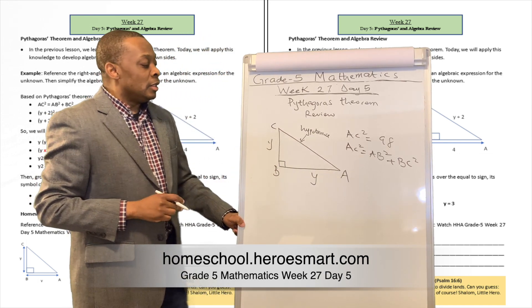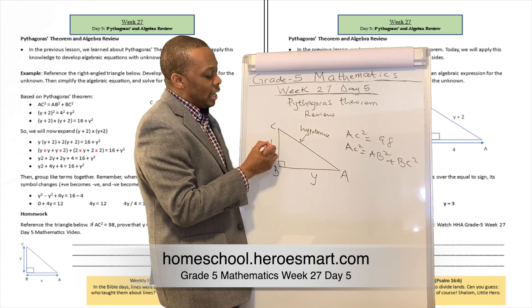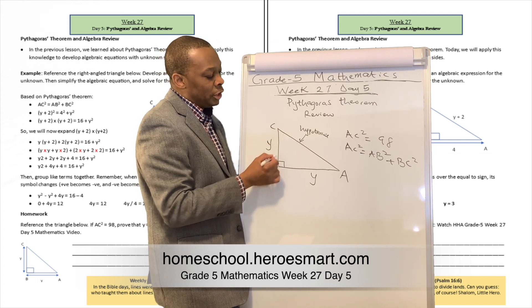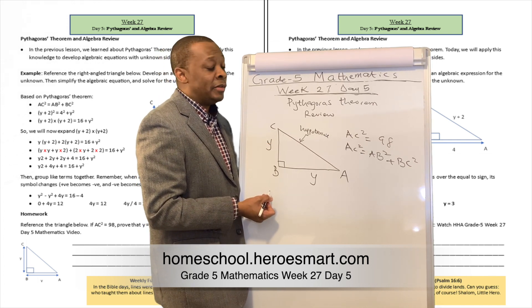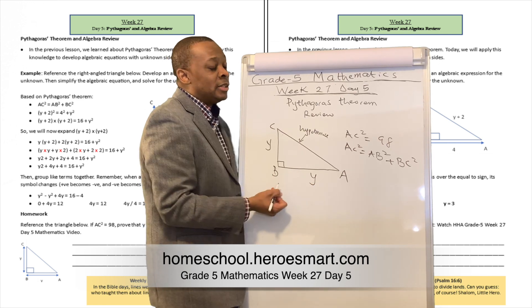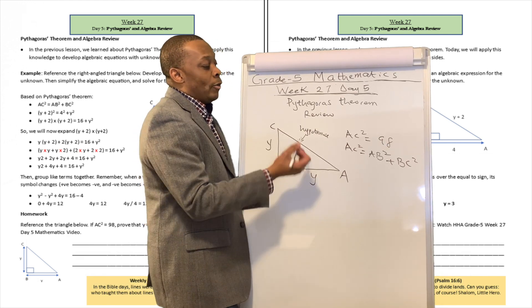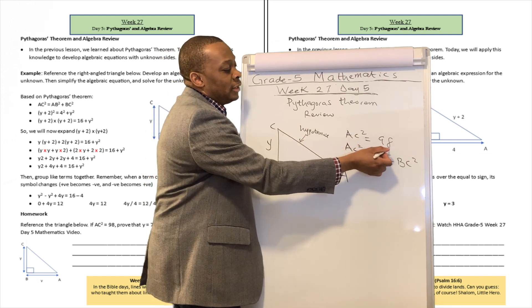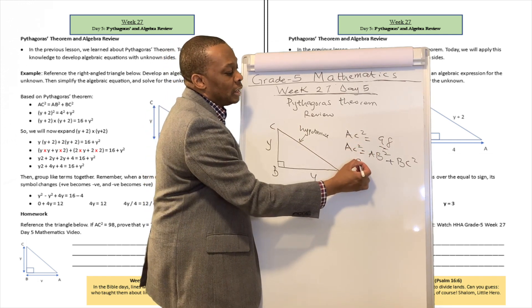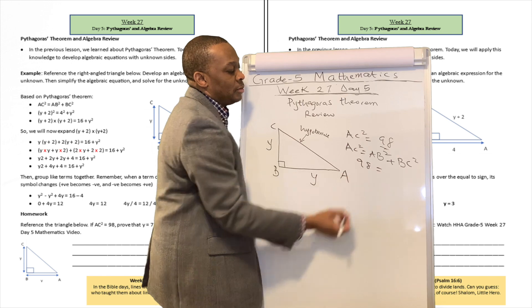Now in this particular situation, if we have Y over here, BC is going to be equivalent to Y, and AB is going to be equivalent to Y. What is AC squared? They told us AC squared is 98, so we can say 98 is equivalent.